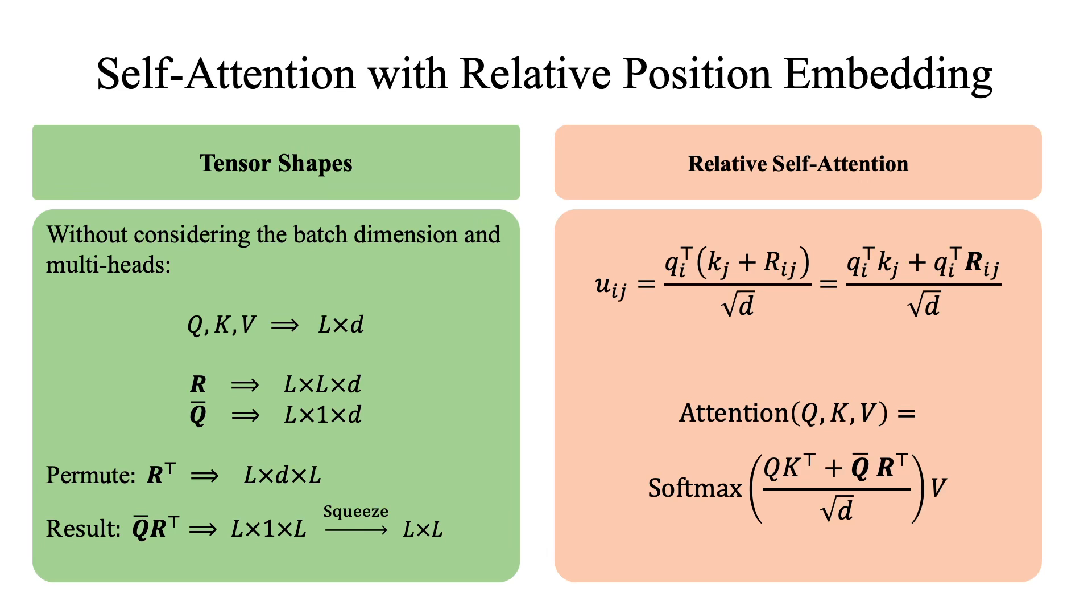In order for matrix multiplication of Q and R, we have to reshape Q to make it a three-dimensional tensor as well. So Q bar has size L by 1 by d. Then Q bar R transpose will have the dimensionality L by 1 by L. So we have to squeeze out the middle dimension to get L by L so that it will be compatible to be added to the standard attention scores.